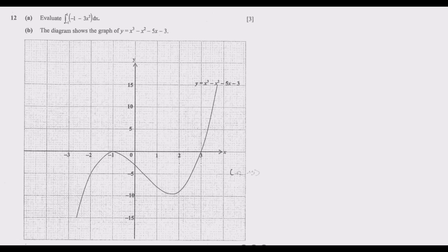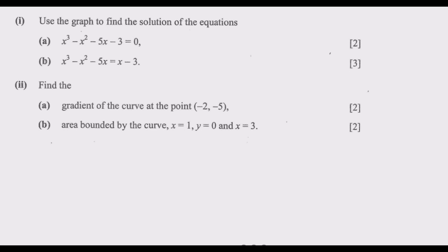Question 12A: evaluate the integral of negative 1 minus 3x squared with respect to x over the interval negative 1 to 1. Part B: the diagram shows the graph of y equals x cubed minus x squared minus 5x minus 3. Sub-question (i): use the graph to find the solution of the equations. Sub-question (ii): find the gradient of the curve at the point negative 2, 5. Then find the area bounded by the curve, x equals 1, y equals 0, and x equals 3.